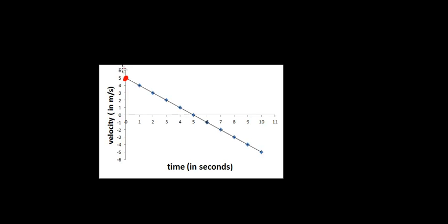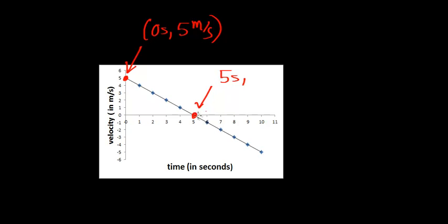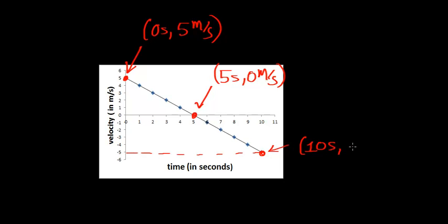To find out more information about the acceleration, I'm going to pick a few points. I'll pick this first point where time is initially equal to 0 seconds and the initial velocity is 5 meters per second. Then I can pick this point at t equals 5 seconds, where the velocity slows down to 0 meters per second. Another point of interest is the final velocity, which occurs at t equals 10 seconds, where the velocity is negative 5 meters per second.